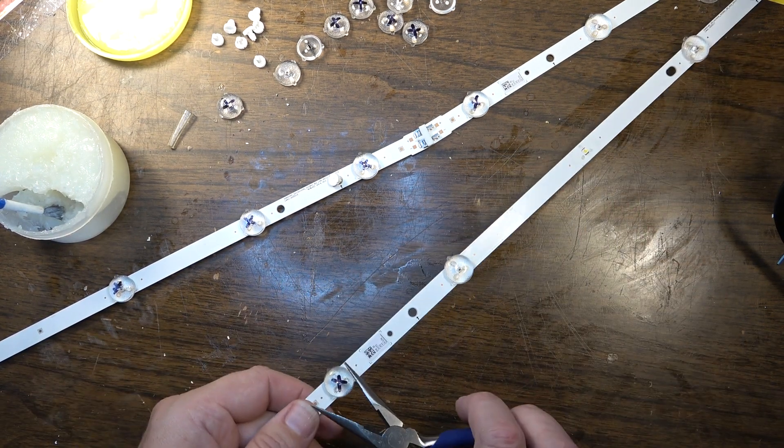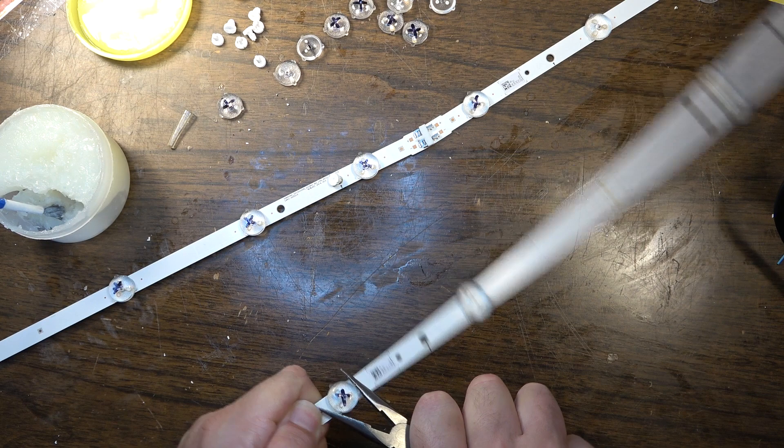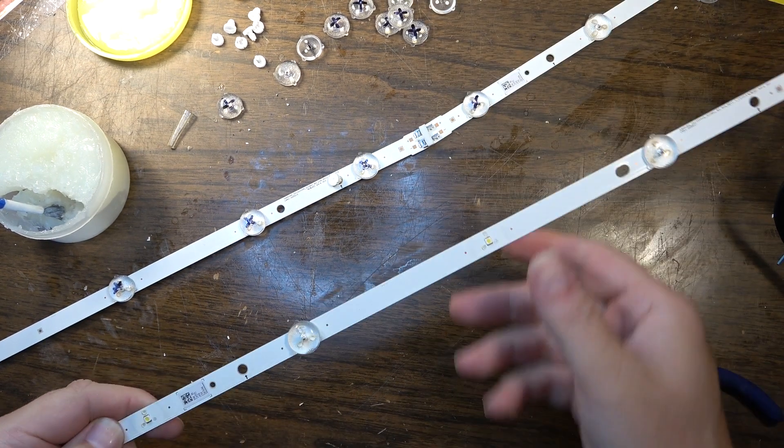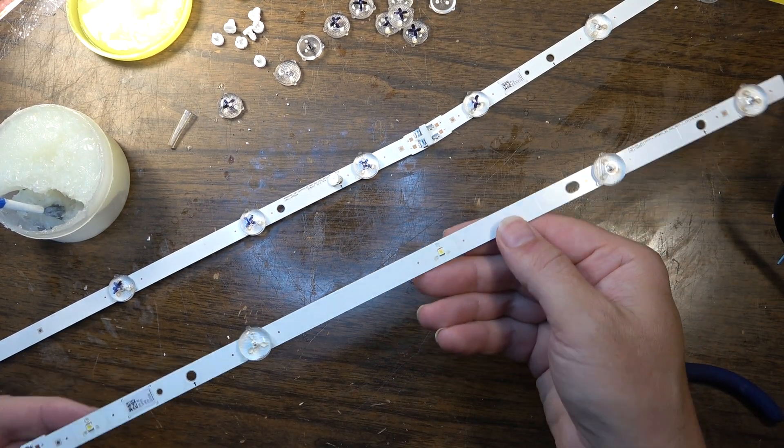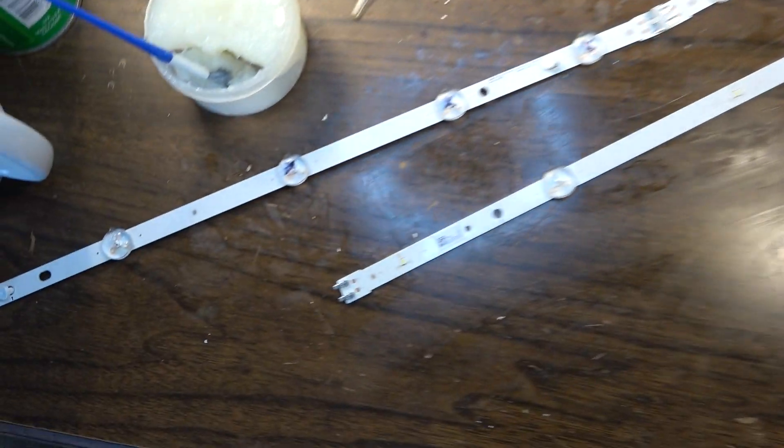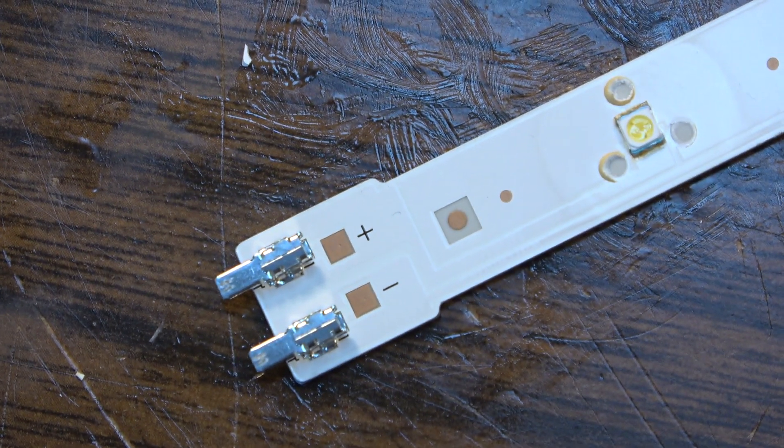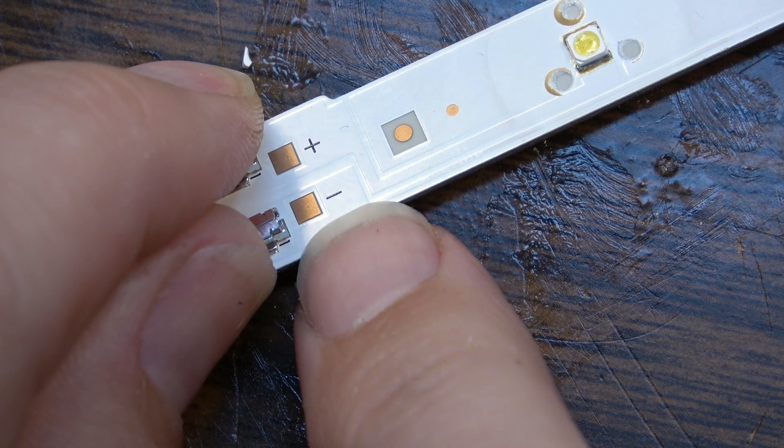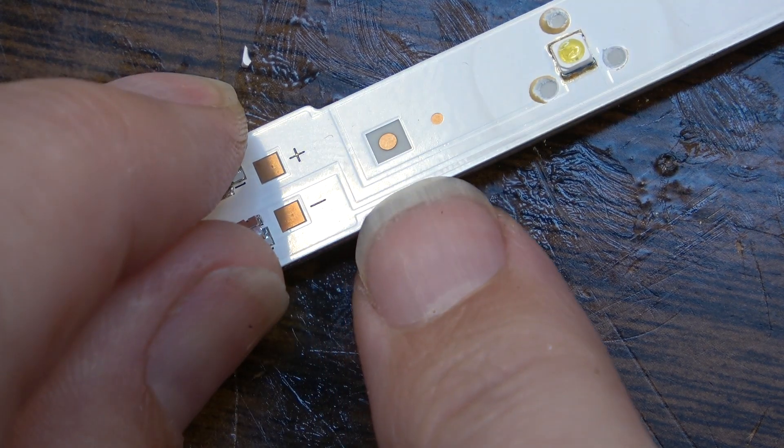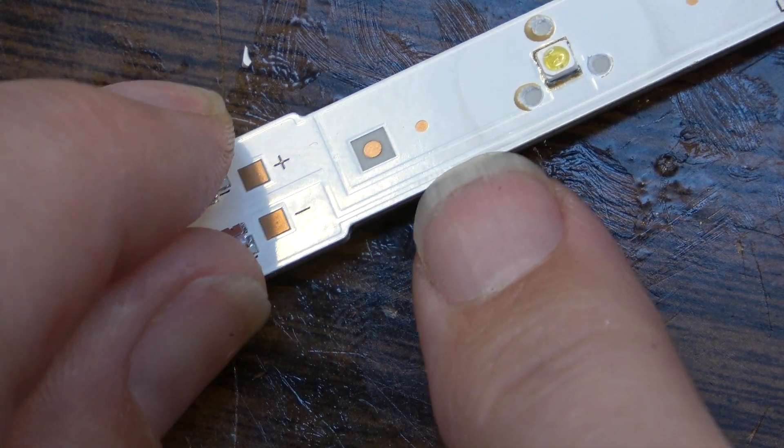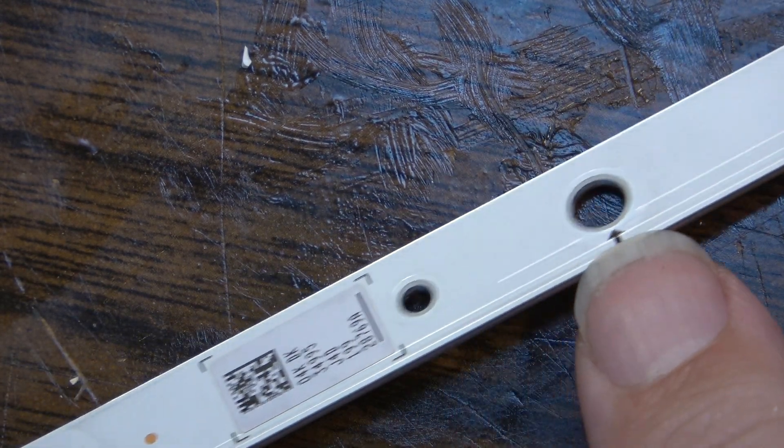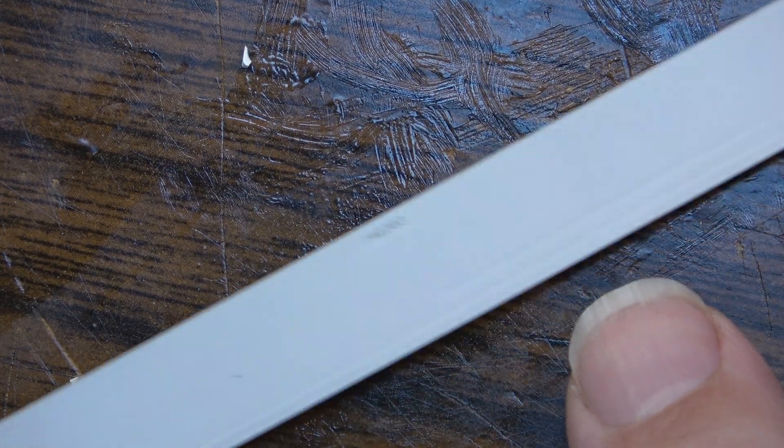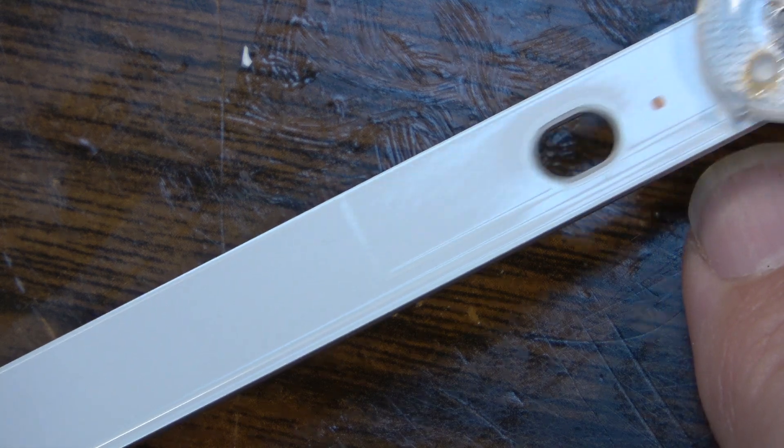Okay, next thing on this board—I think on pretty much all these boards—you're gonna have a positive and a negative on the end right there. You see the positive and the negative. The side with the negative, you'll notice the negative has a line that runs all the way the length of this thing, all the way to the other end down here.